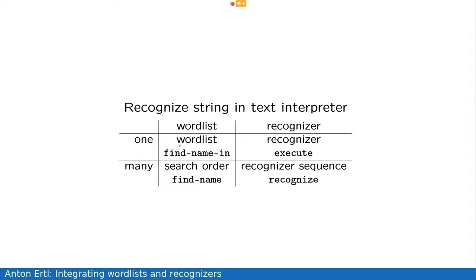And basically this is a table where we have wordlists and recognizers on one dimension, and one of them or many of them in the other dimension. So if you have one wordlist it's a wordlist, if you have one recognizer it's a recognizer, if you have many wordlists you have a search order, and if you have many recognizers it's a recognizer sequence.